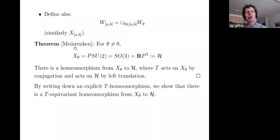Eckhard Meinrenken showed that x_theta is isomorphic to PSU(2), SO(3). We denote this by script H. There is a homeomorphism from x_theta to RP^3, where the maximal torus acts on x_theta by conjugation and on RP^3 by left translation. We're able to write down an explicit T-homeomorphism so that we can show that there's in fact a T-equivariant homeomorphism from x_theta to RP^3.